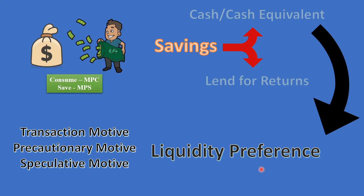Liquidity preference is a preference — it is a choice. If you have a preference, you can keep it. Liquidity means readily available cash. If the market requires it, you keep the cash readily available. Liquidity preference is determined by three motives.